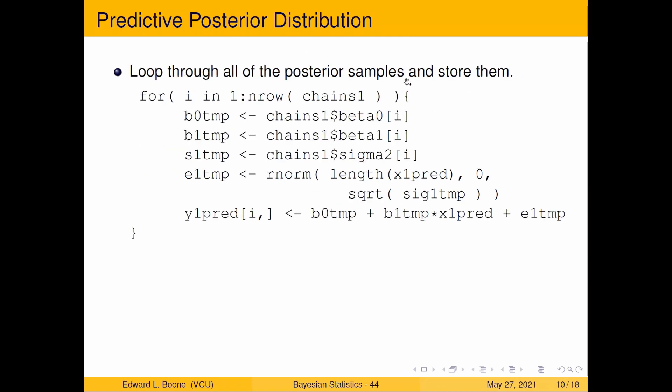I'm going to do the exact same thing - I'm going to get the sigma squared in sigma one temp. Then I'm going to make an epsilon one temp, so it's going to be a normal - this is where that likelihood comes in. We're pulling however many predictions we have, mean of zero. In R you need to put in the standard deviation, and we have variances, so we just take the square root of it. Put it all together: beta zero temp, beta one temp times our